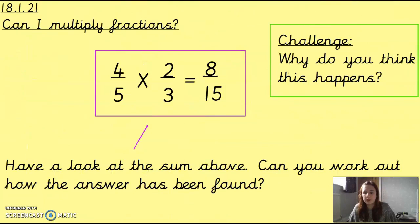Now, that was just a recap because we might have to simplify later on in the lesson. So we are going to look at multiplying fractions. Now, what I've done is I've given you a sum on the board. And I've given you the answer already. So we've got 4 fifths times 2 thirds equals 8 fifteenths. Now, what I want you to do is have a look at this sum and see if you can work out how we got this answer. Pause the video and have a little think and then unpause it when you think you've got the answer. And as a little challenge, why do you think this happens?